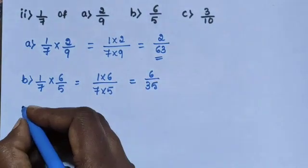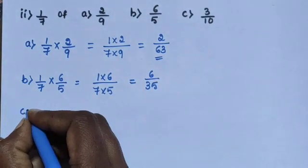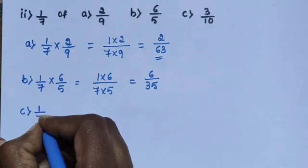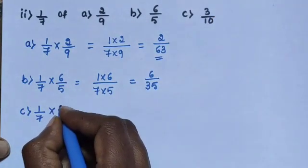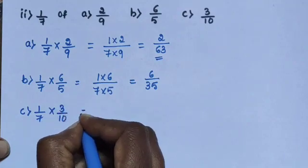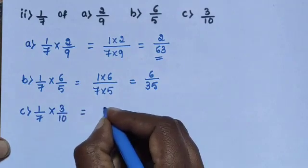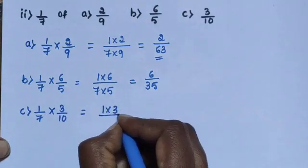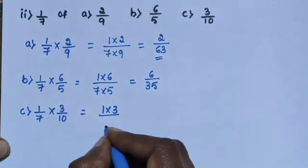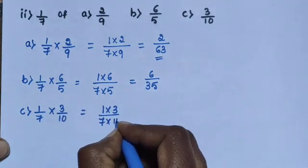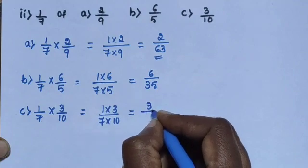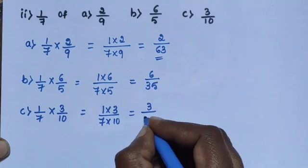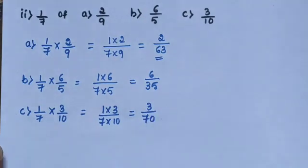Next, question C: 1/7 multiplied by 3/10 equals 1×3 divided by 7×10. 1 threes are 3, 7 tens are 70. The answer is 3/70.